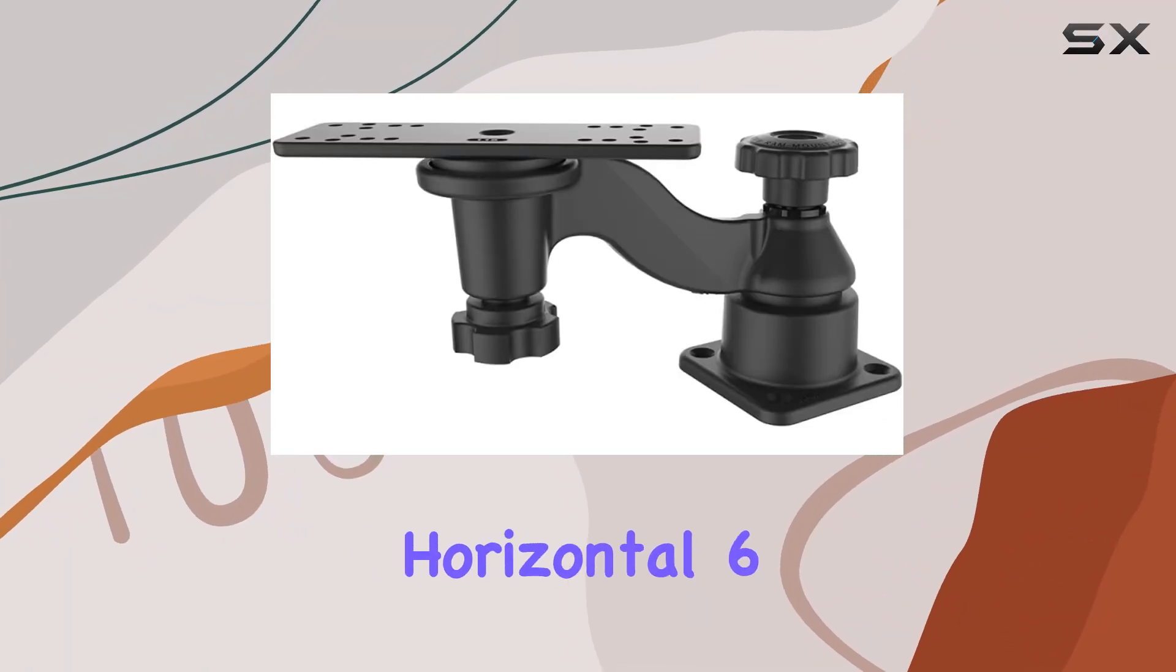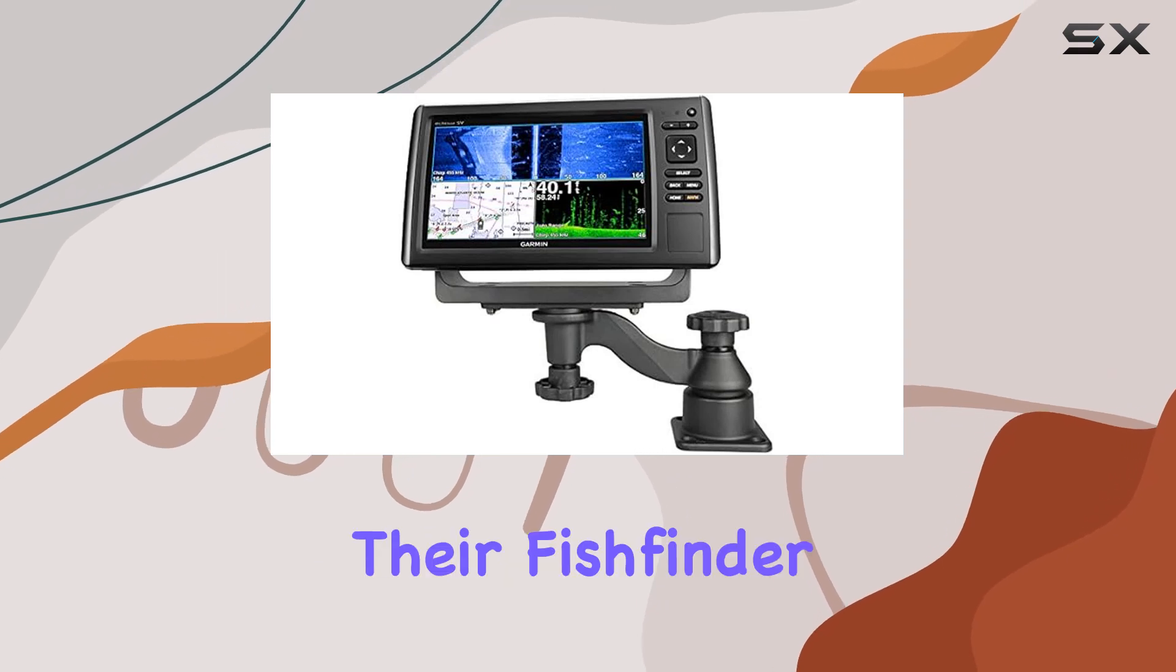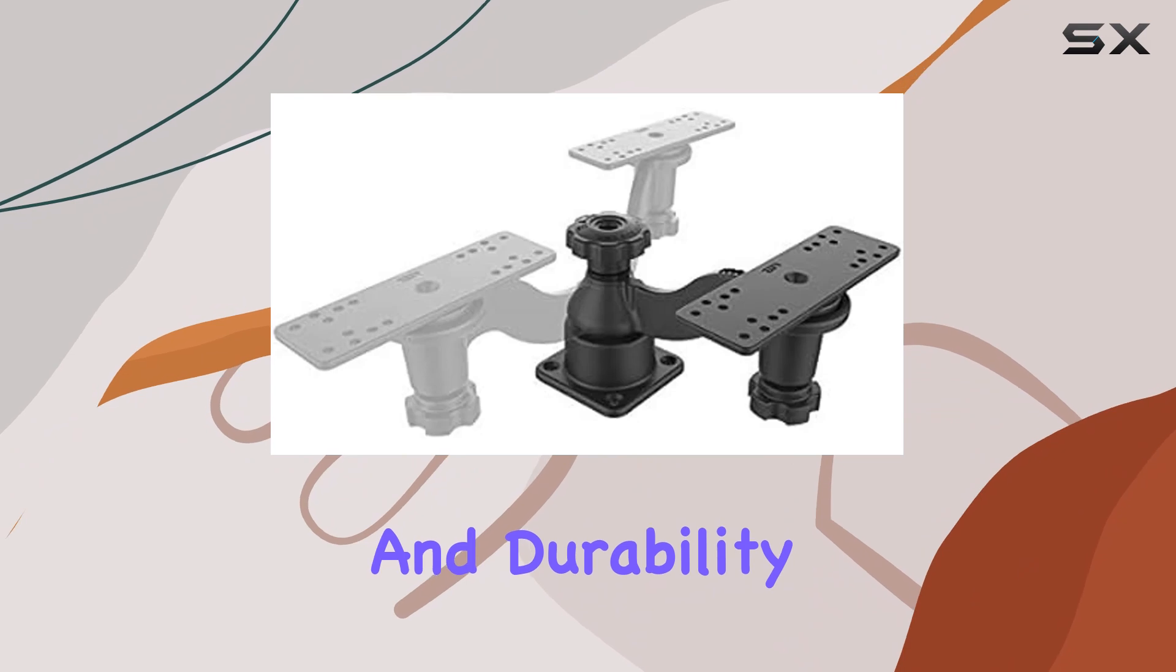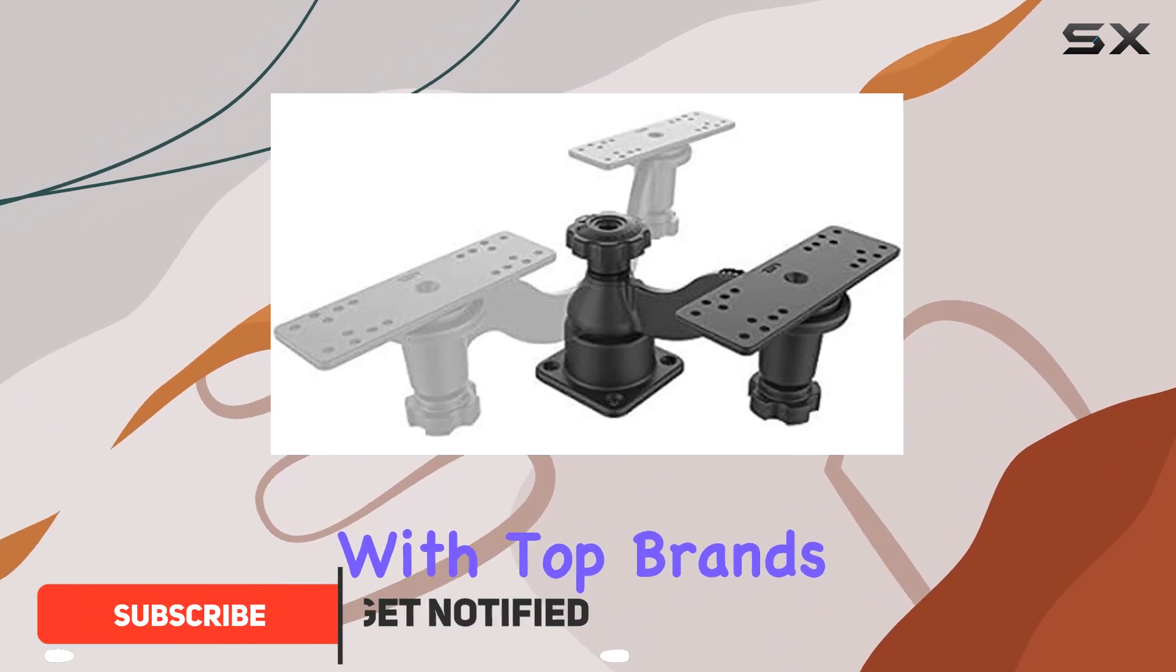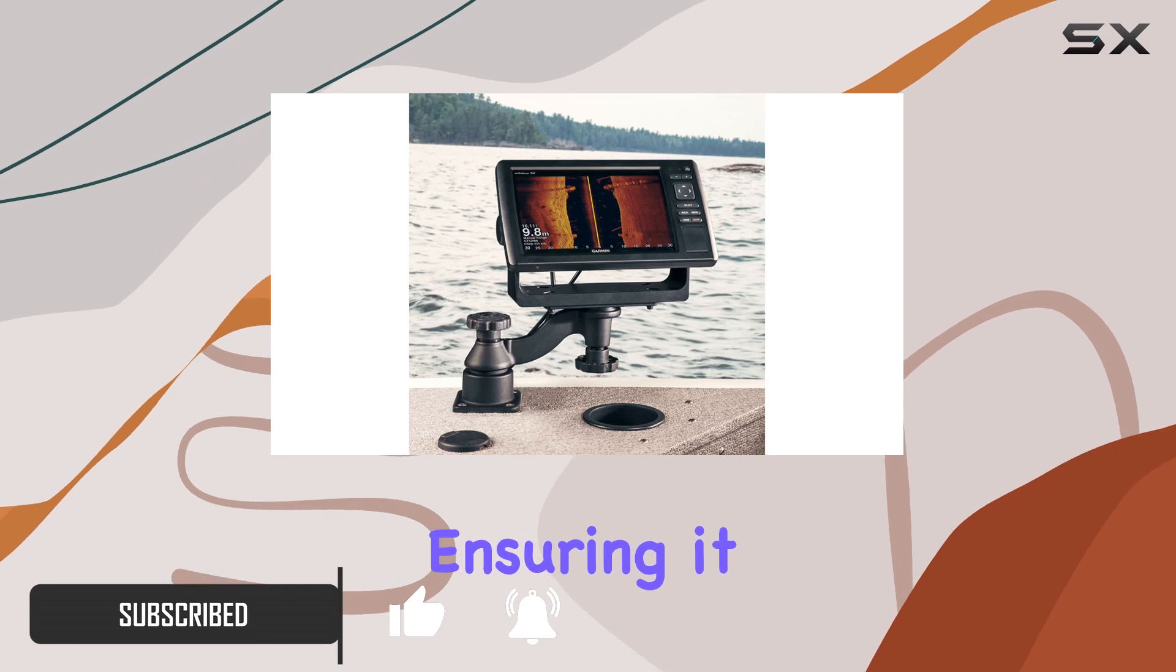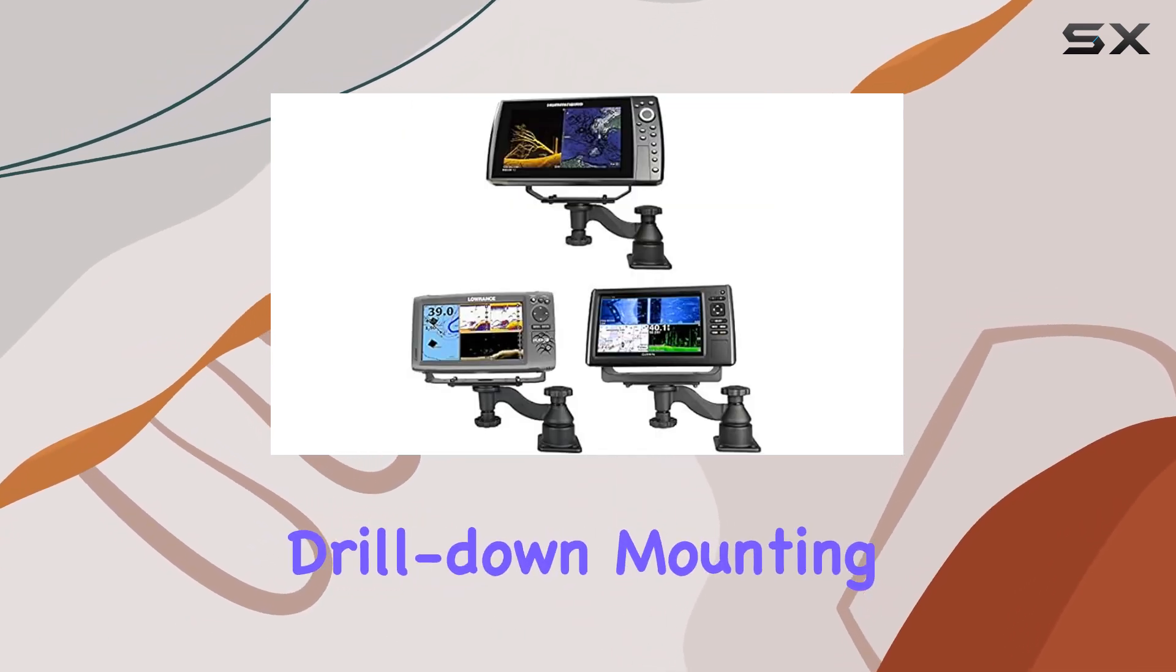The RAM Mounts horizontal six inch swing arm mount is a game changer for anyone looking to optimize their fish finder or chart plotter setup. Designed with versatility and durability in mind, this mount is compatible with top brands like Garmin, Humminbird, Lowrance, and Raymarine, ensuring it meets the needs of various devices. The universal drill down mounting solution provides a solid and secure installation.